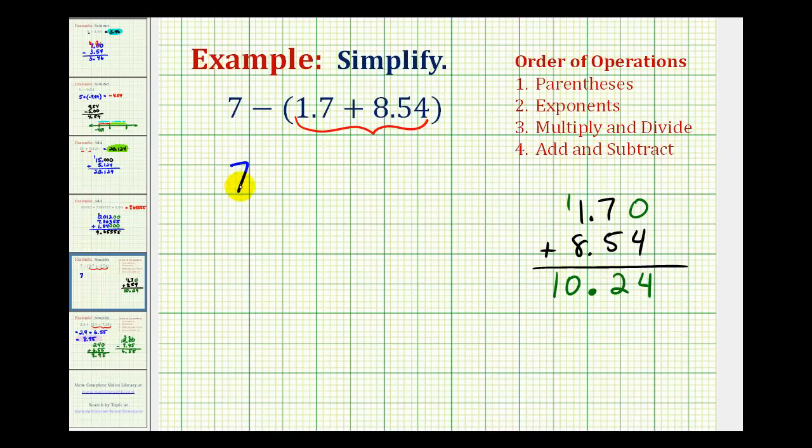So now we have 7 minus 10.24. Notice how this decimal is larger than the 7, and so this difference is actually going to be negative.